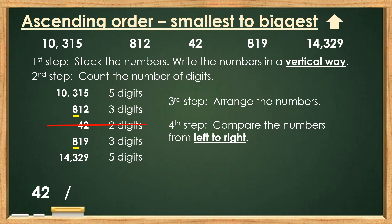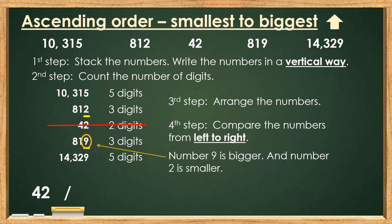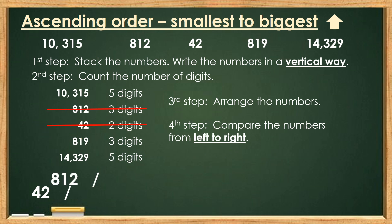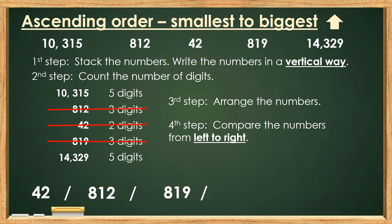8 and 8 are the same, so we have to go to the next number. 1 and 1 are also the same, so let's go to the next number. 2 and 9 are not the same — number 9 is bigger and number 2 is smaller. So it means the next number is 812 and the bigger number is 819.